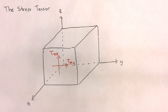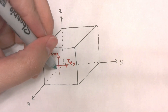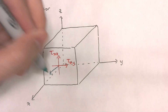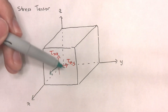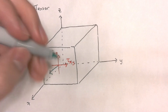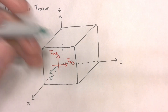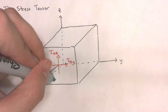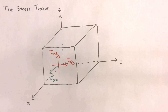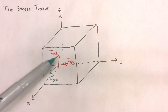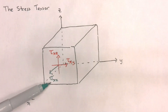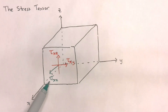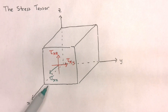We should also remember that there is a normal stress component that acts perpendicular, or normal, to the x-face. This normal component will be identified as sigma x-x. We will call shear stresses by the Greek letter tau, and we will identify normal stresses with the Greek letter sigma. In this case, the stress acts on the x-face and also in the x-direction, which means it will have the subscripts x-x.